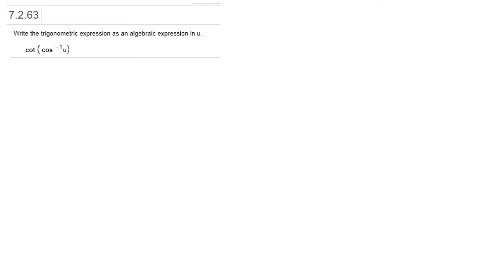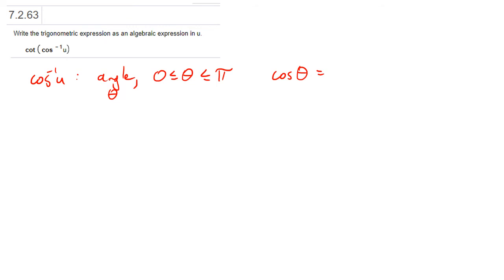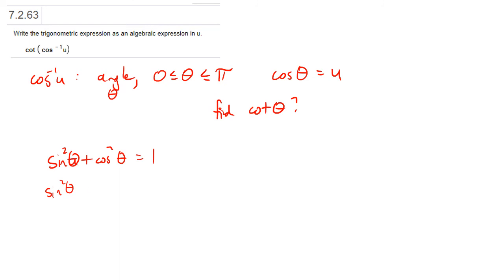This problem doesn't ask us to find a number; it asks us to find an algebraic expression because u isn't given — u is left as a variable. Arc cosine u just means an angle theta, specifically between 0 and pi, in quadrants 1 or 2 for arc cosine, where the cosine of the angle equals u. We're asked to find the cotangent of theta. Using the Pythagorean identity, sine squared theta plus cosine squared theta equals 1. The cosine of theta is u, so we get u squared, meaning sine squared theta equals 1 minus u squared, and therefore the sine of theta equals plus or minus the square root of 1 minus u squared.